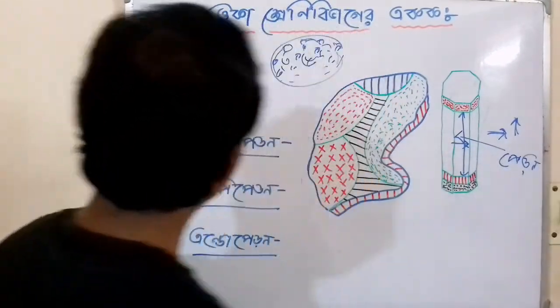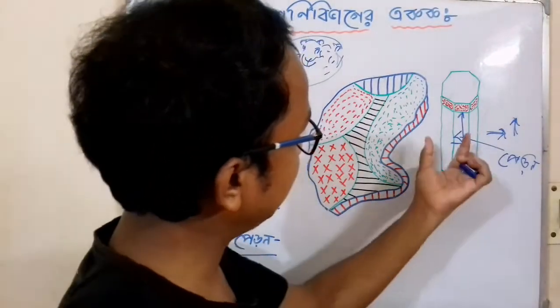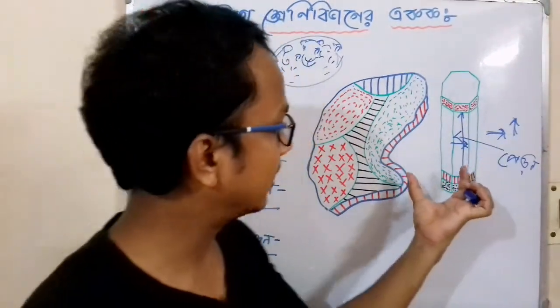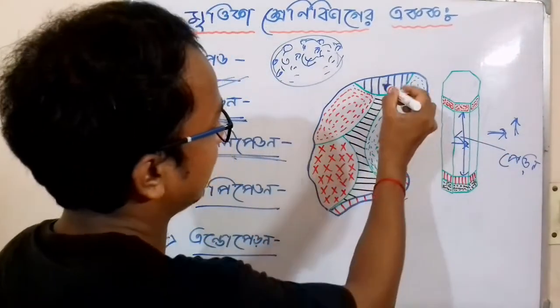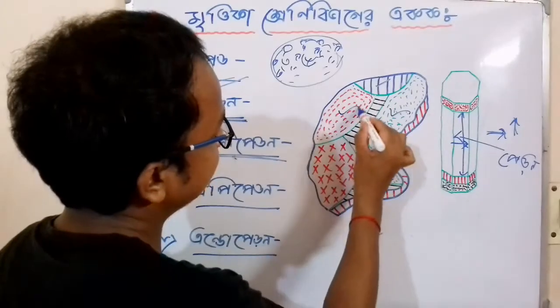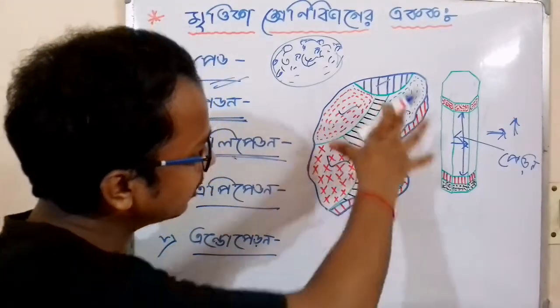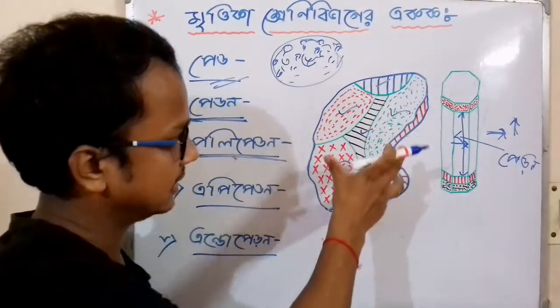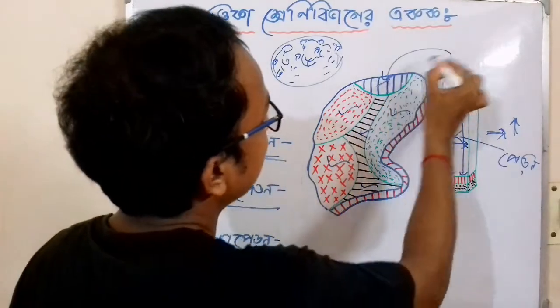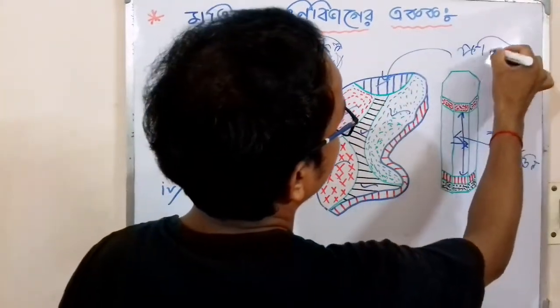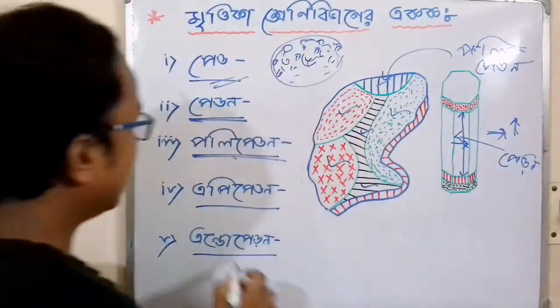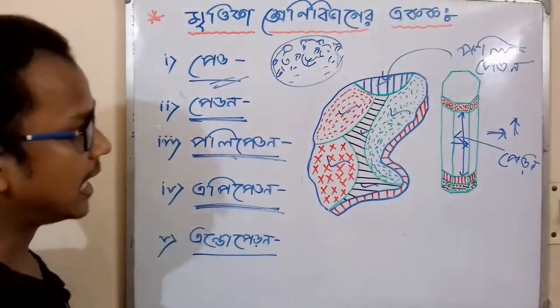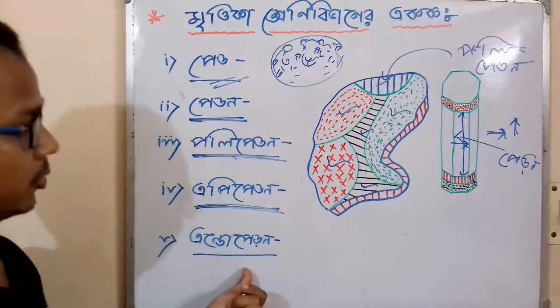Next, Polypedon. Polypedon is above one point, the Epipedon. Now we see Polypedon. Next, Epipedon. Epipedon or Endopedon?